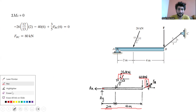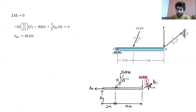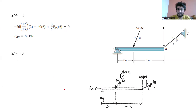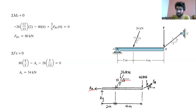Let's find the reaction forces. Let's find the reaction forces in the x direction. We have Ax, and it is negative because it is moving in the negative x direction. We have this horizontal force: 26 multiplied by 5 over 30. We also have the 80 kN force, and it is positive. Because of the horizontal component, we have 4 over 5. When we solve this, we get the force in the x direction, which is 54 kN.